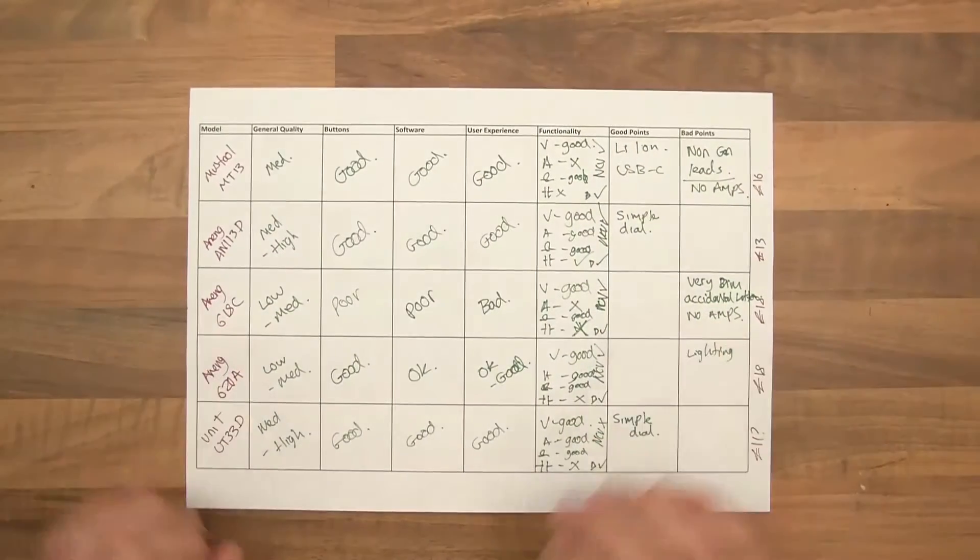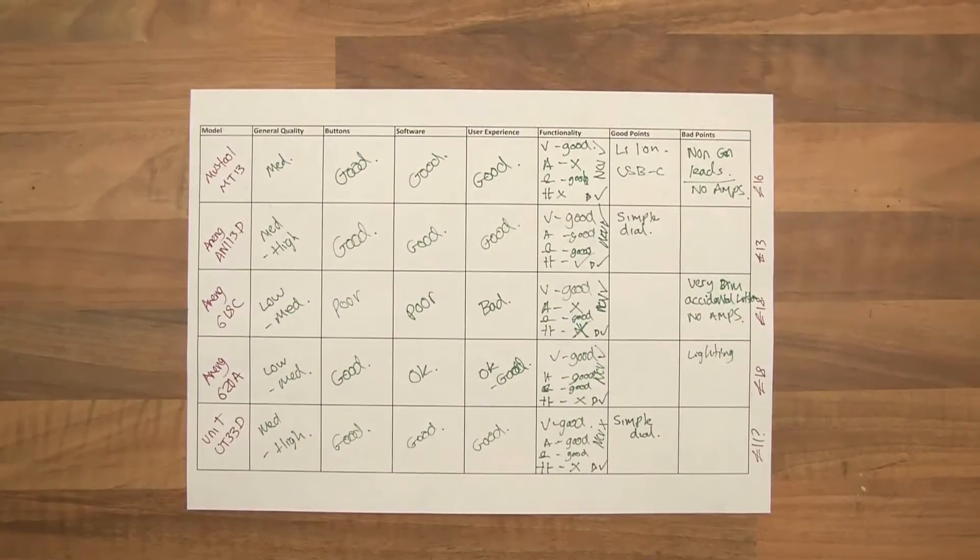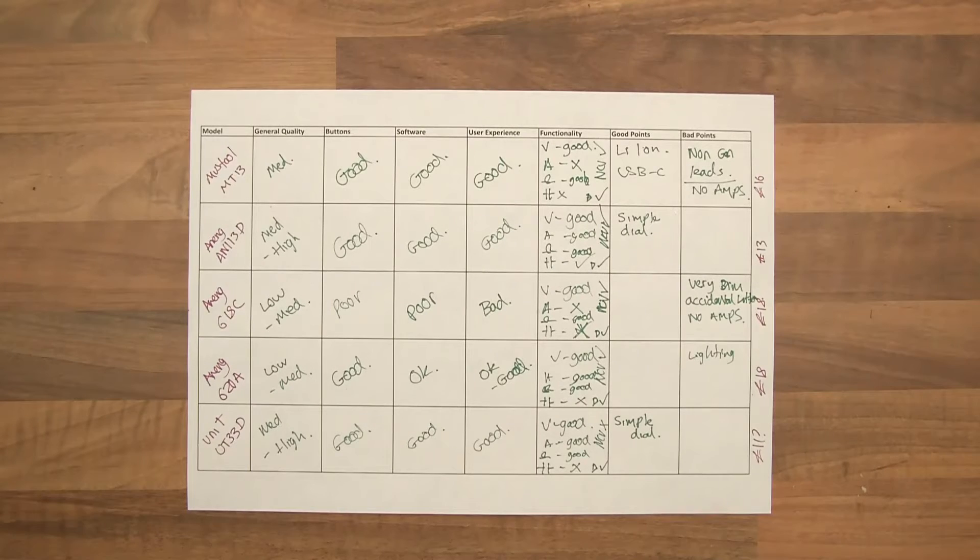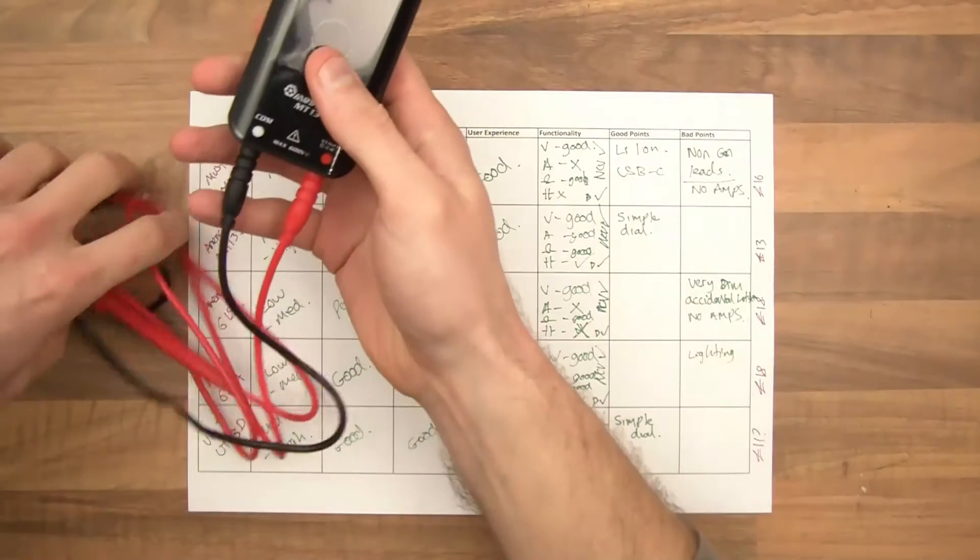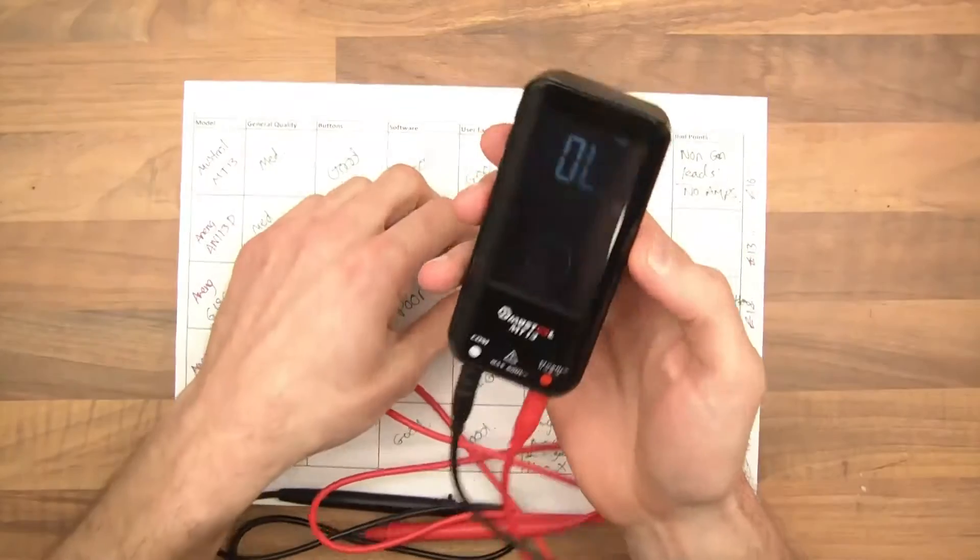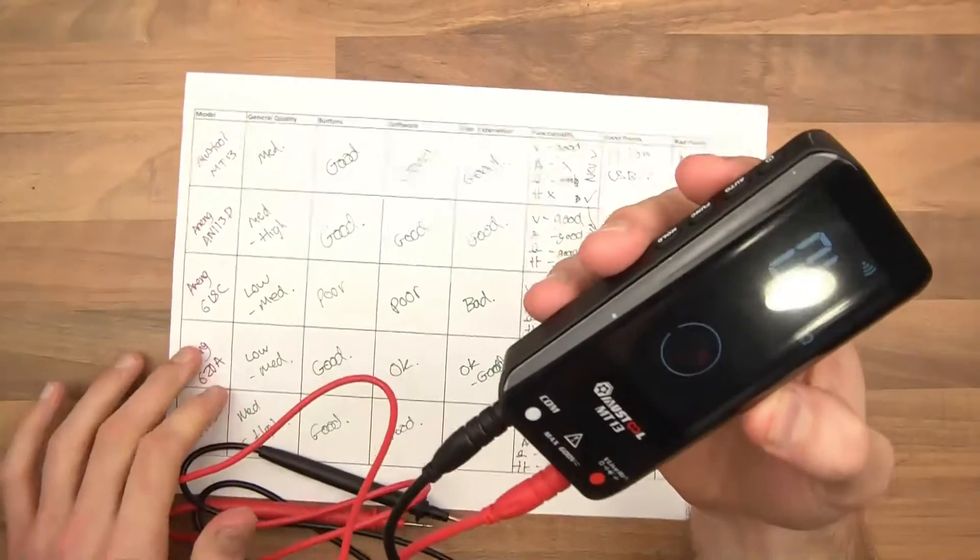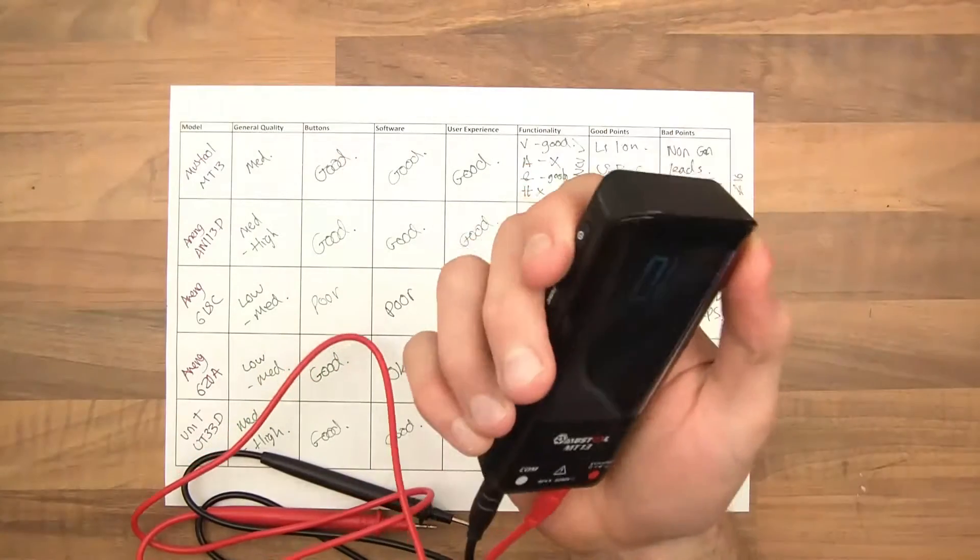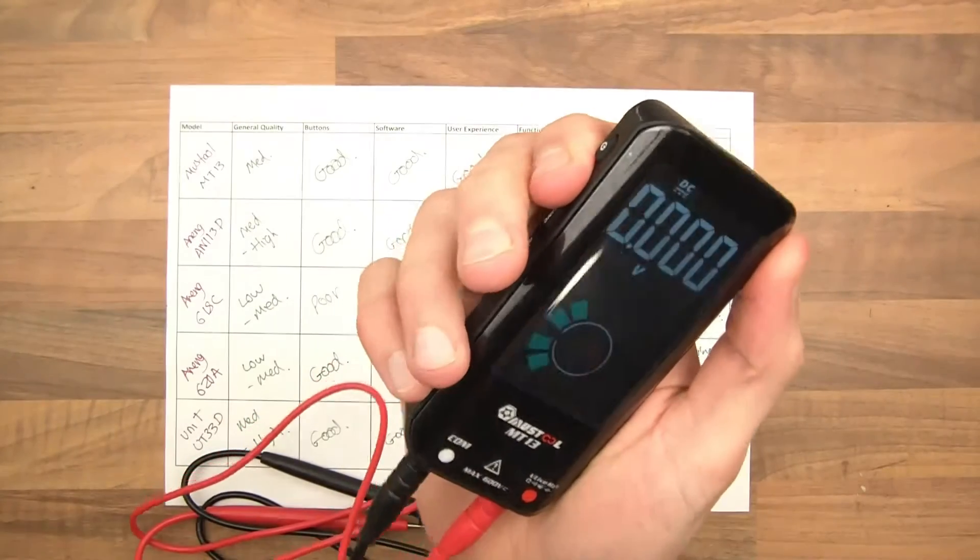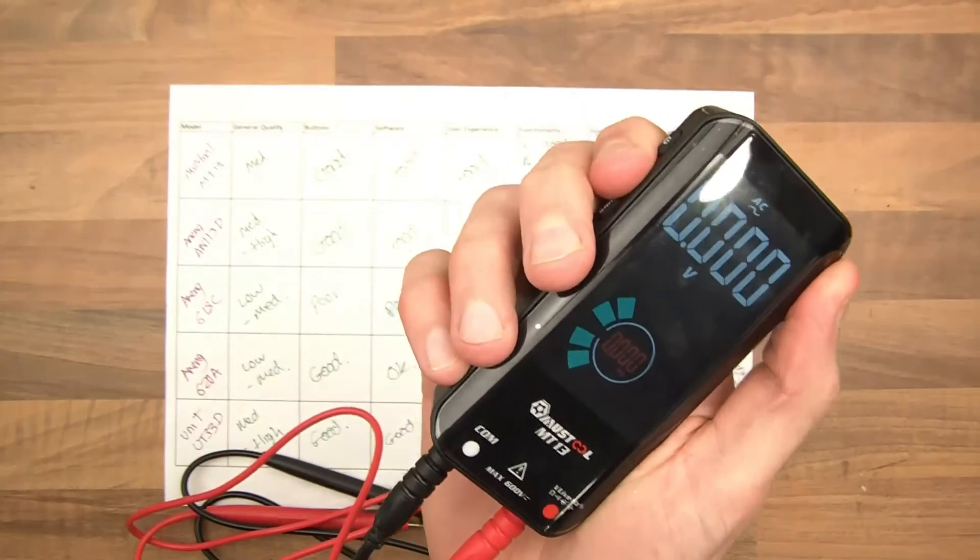I've done this table to help me analyze the results of what I've found. Anyway, first thing I'm going to do is introduce you to the first one. So this is Mustool MT-13. And generally speaking, I would say this is fairly good quality. The buttons are easy. You can easily cycle through the menus. It has an auto mode.